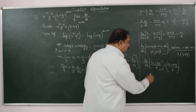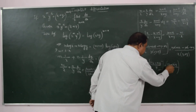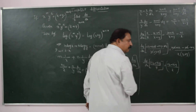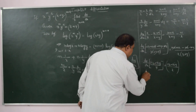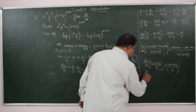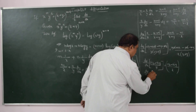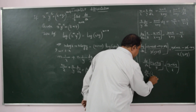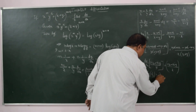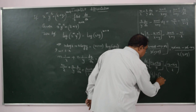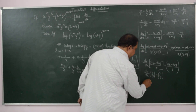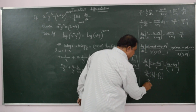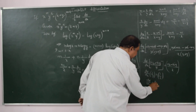Now nx minus mx also cancel on both sides. Therefore dy by dx into 1 by y is equal to 1 by x. Therefore, dy by dx is equal to y by x.